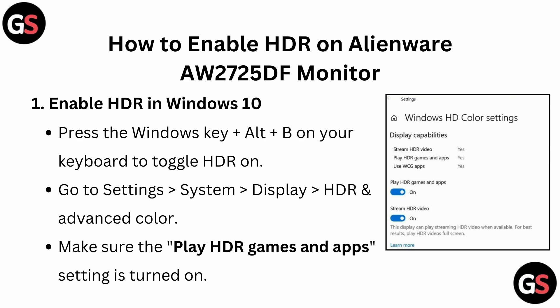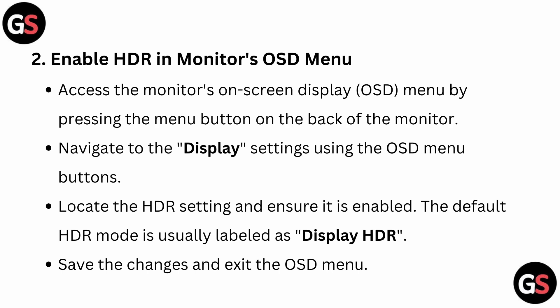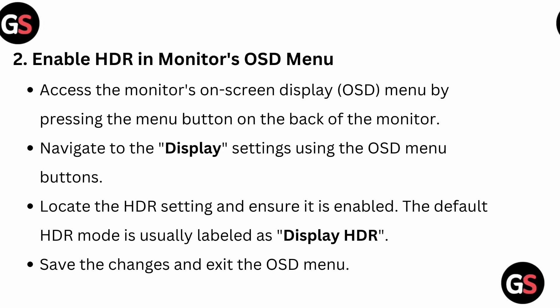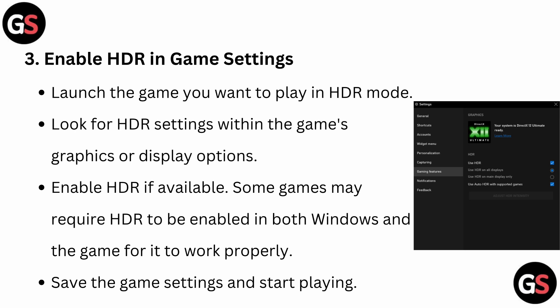Step 2: Enable HDR in the monitor OSD menu. Access the monitor on-screen display menu by pressing the menu button on the back of the monitor. Navigate to the Display Settings using the OSD menu buttons, then locate the HDR setting and ensure it is enabled. The default HDR mode is usually labeled as 'Display HDR.' Save the changes and exit the OSD menu.